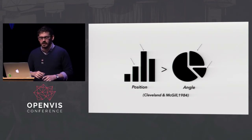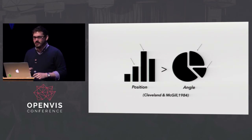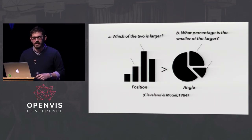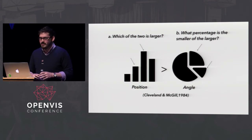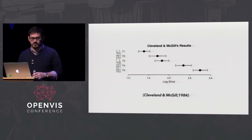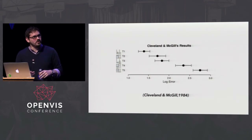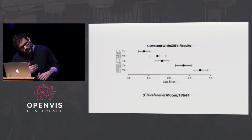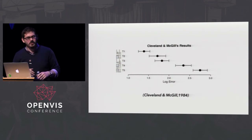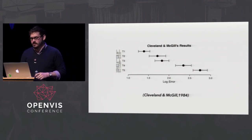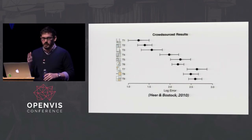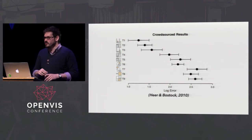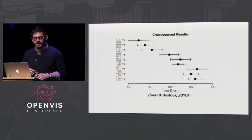The task is from Cleveland and McGill's 1984 studies - one of the reasons we know a bar chart is better than a pie chart. They asked which of two marks is larger and what percentage is the smaller of the larger. The results give a ranking: if you're like a robot you'll be near 1.0 on the log error scale, and a task like the stacked bar chart T5 will be further up on error. Jeff Heer and Bostock replicated this on Amazon's Mechanical Turk, giving us a great baseline to study these experiments further.